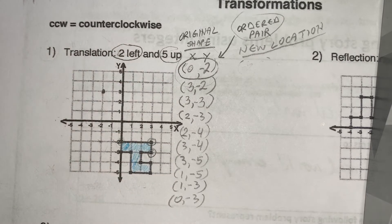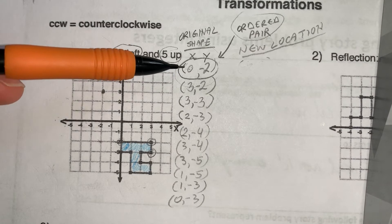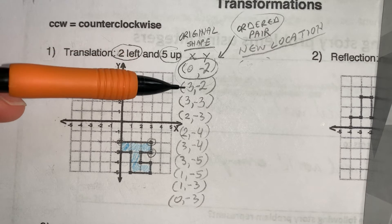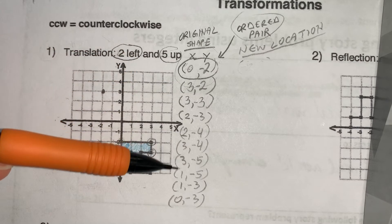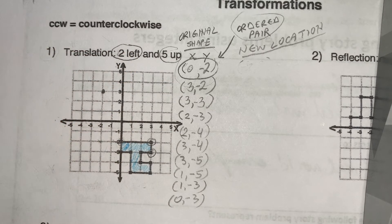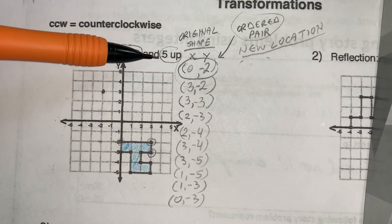You can go ahead and double check. So the next step in this problem is basically we're moving each one of these ordered pairs to a new location. That new location is going to be two to the left and five up.